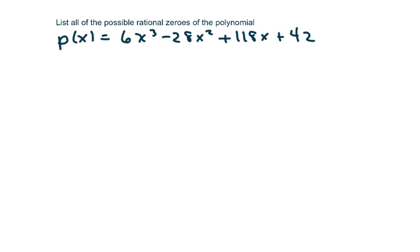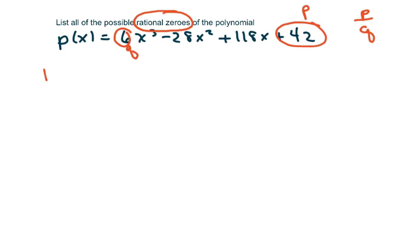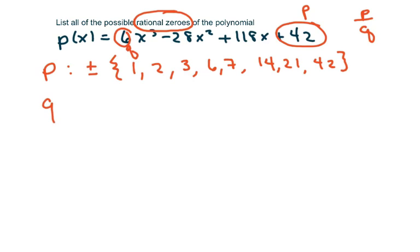The next problem is listing the possible rational zeros. I'm going to let this constant term be my p and the leading coefficient be my q. The possible zeros are p over q using all the factors. The factors of p — which is 42 — are plus and minus 1, 2, 3, 6, 7, 14, 21, and 42.